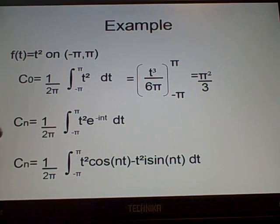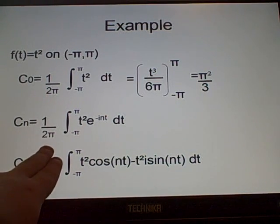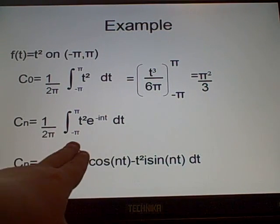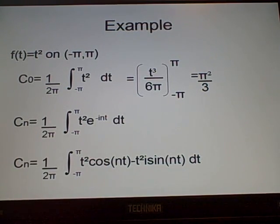Our cn, now, this is the tricky part, this is the part that takes forever, it really does. That's why these questions are worth a lot of marks in exams, sometimes up to like 15, 20 marks. So, cn is 1 over 2 pi times integral from minus pi to pi of t squared e to the minus int dt.